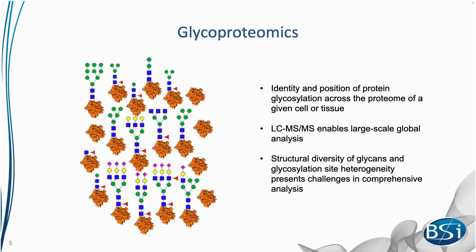MS spectra tend to be more complicated due to the presence of different isomers and many different glycan fragmentation ions, some of which have previously required manual interpretation. Database searching for spectral matches can quickly become a combinatorial problem with very large search spaces, requiring new, innovative software solutions.